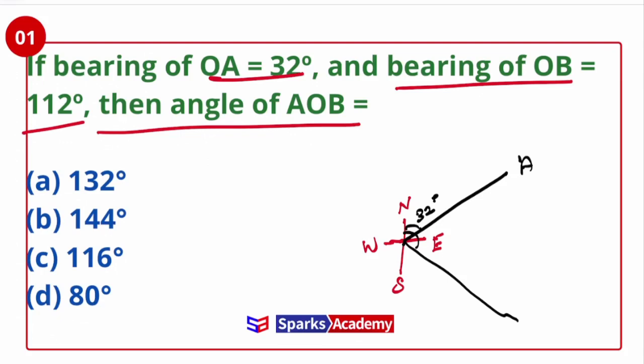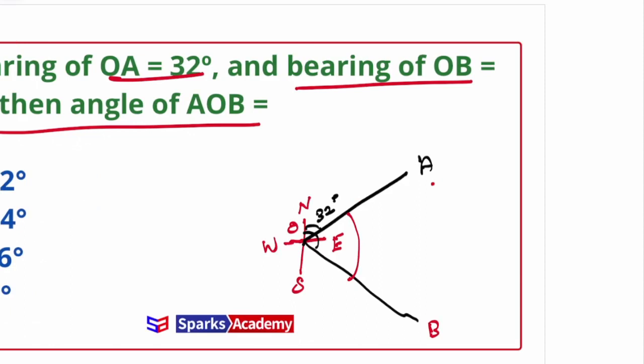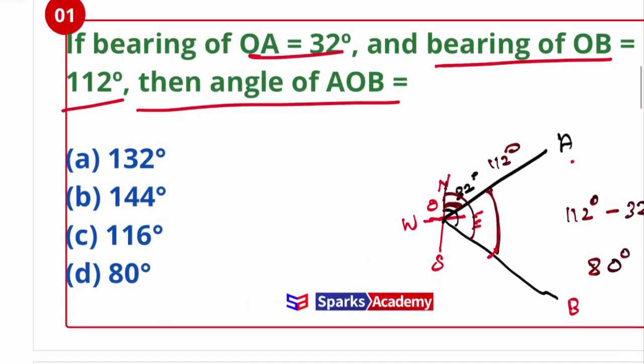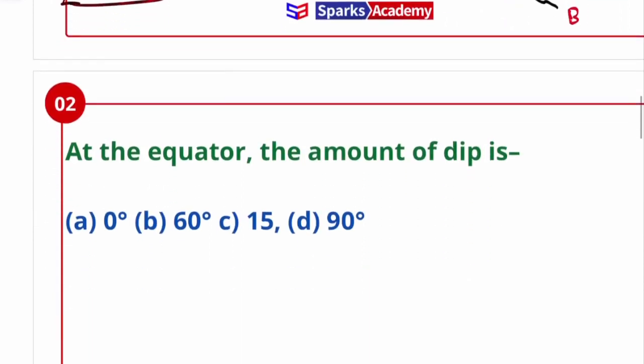From north to this line, the angle is 112 degrees. This is point B. What is the angle AOB, the included angle? We can easily calculate. We know this is 32 degrees. From north to this one is 112 degrees. So the included angle is 112 degrees minus 32 degrees, which is 80 degrees. The correct answer is 80 degrees.